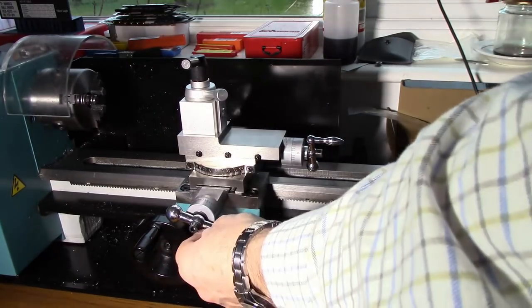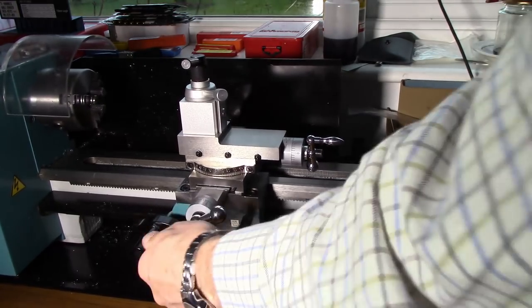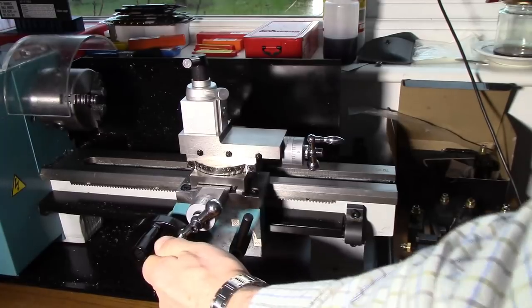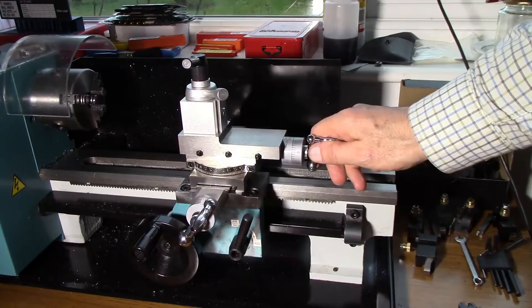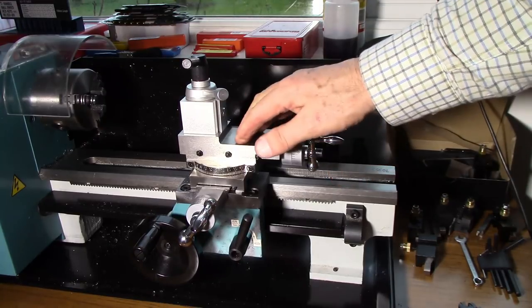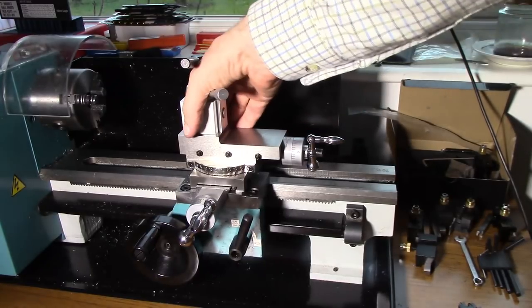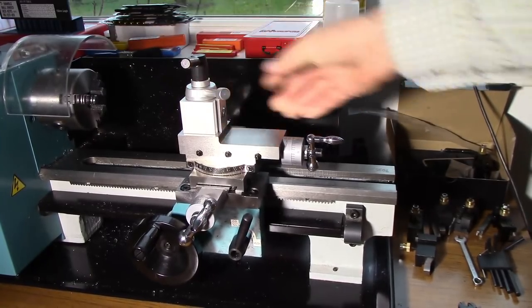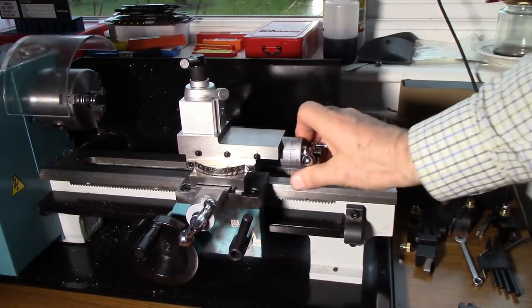Whereas on the cross slide it moves correctly. So I wondered why that was and I seem to be in a situation where I either got to have the top slide too loose from the point of view of unwanted movement in order to allow this micrometer dial to move as it should do.